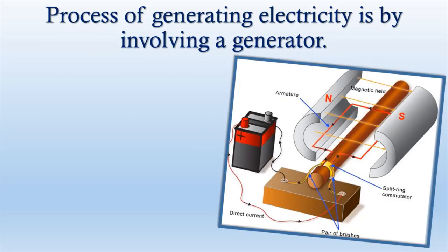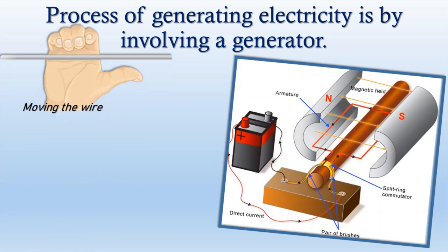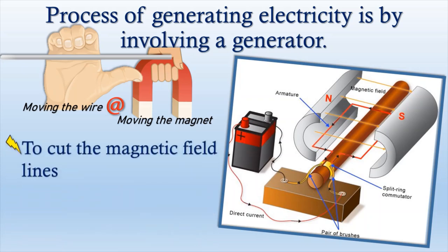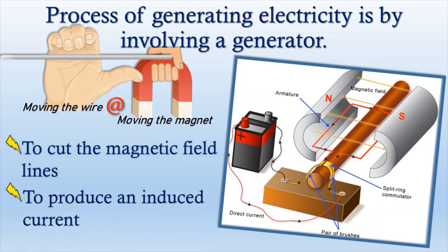Have you ever wondered how electricity is generated? Electricity is generated by a generator. Looking at this generator model, can you find two main components that generate current? According to Michael Faraday, there are two main steps to generate electricity: first, by moving the wire or moving the magnet. Both actions will cut the magnetic field lines and produce an induced current.